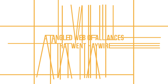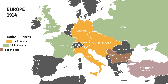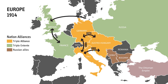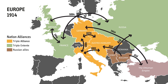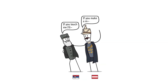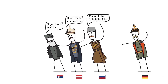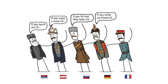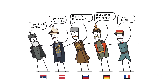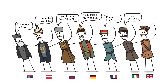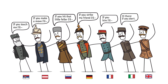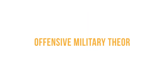Three: a tangled web of alliances that went haywire. In the decades prior to the war, many nations created a web of alliances. The result was that almost any declaration of war, or even mobilization of military power by a relatively small country, could create a domino effect, sucking more and more countries into conflicts they had no interest in.